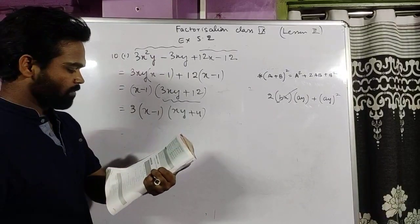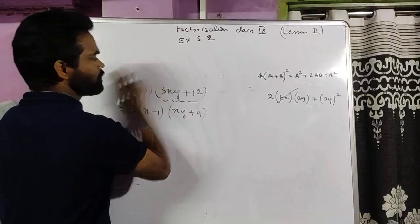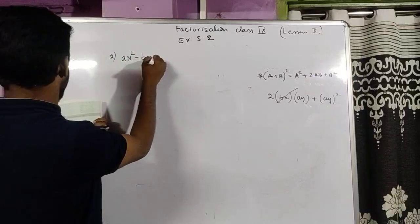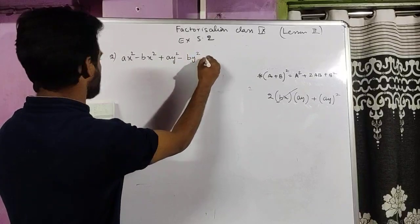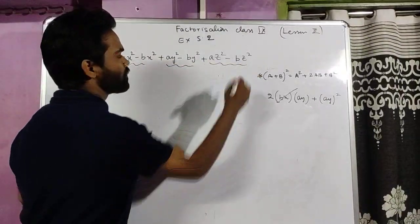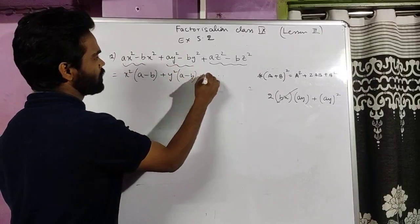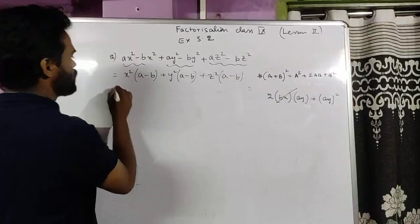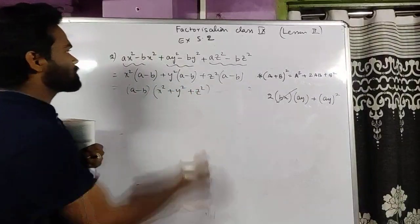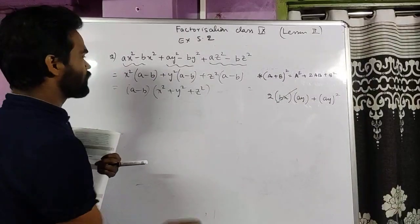Sum 12: ax² minus bx² plus ay² minus by² plus az² minus bz². It is already arranged in groups. Taking x² common: x²(a minus b). Taking y² common: y²(a minus b). Taking z² common: z²(a minus b). In all three groups, (a minus b) is common. Taking (a minus b) out, what is left is x² plus y² plus z². Factorized: (a minus b)(x² + y² + z²).